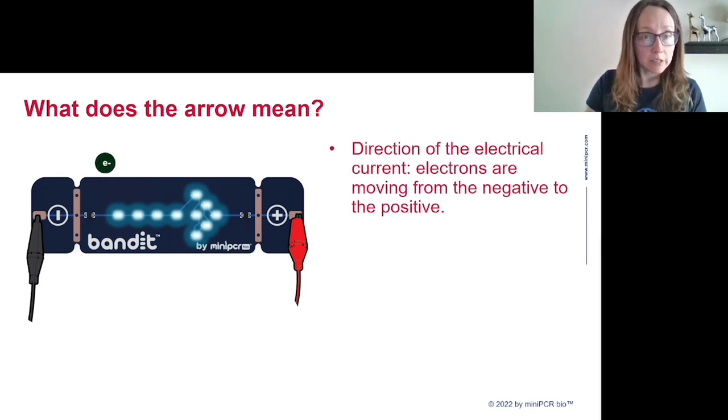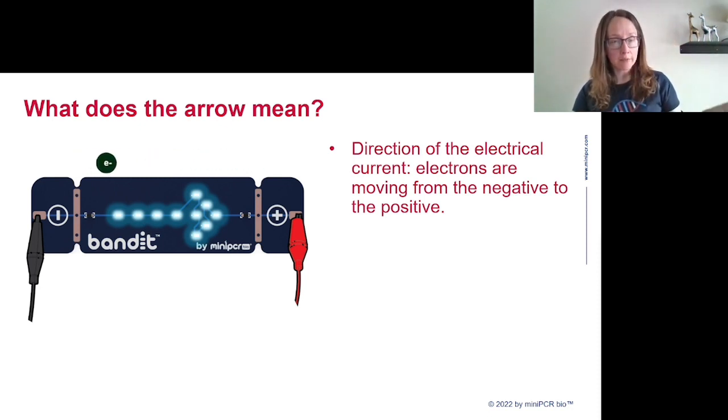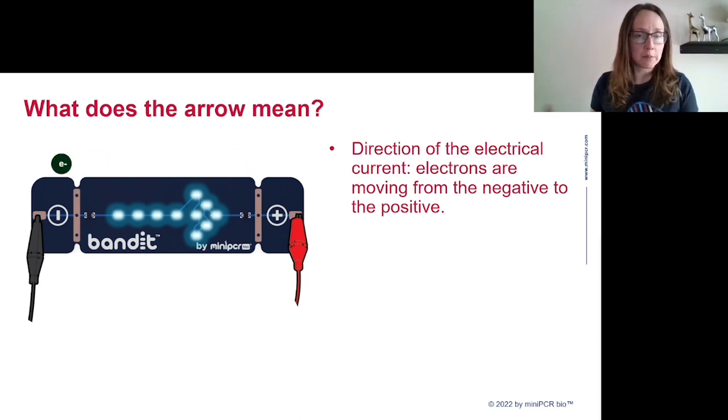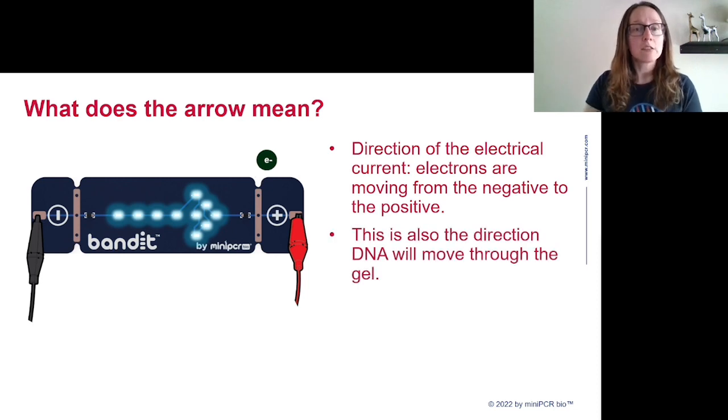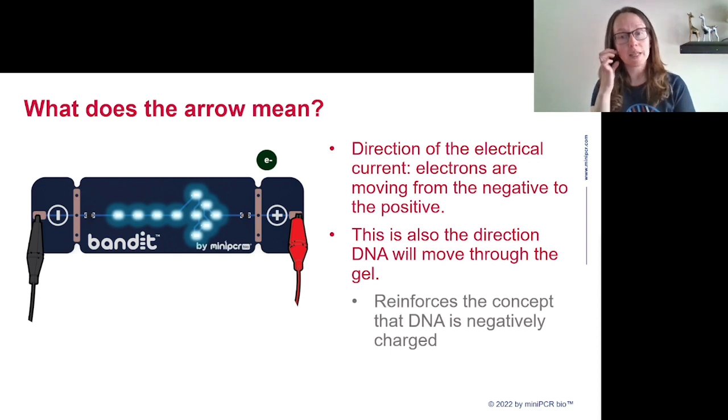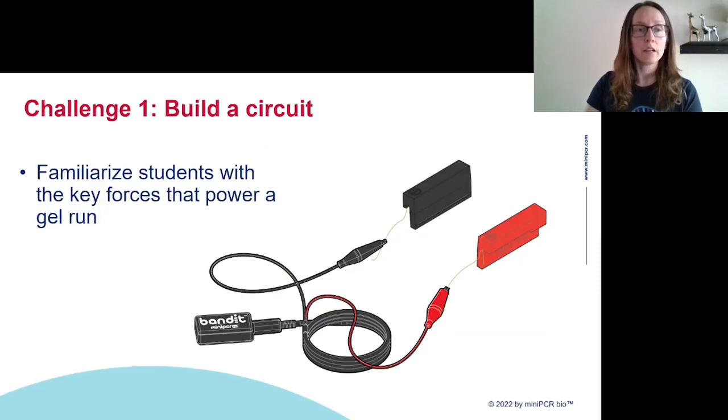When we connect the electrodes in the correct way and our arrow lights up, that tells us that electrons are moving from the negative electrode to the positive electrode. The flow of electrons is electricity. How does this apply to our electrophoresis system? This is also telling us the direction DNA will move through our gel. It'll reinforce the concept that DNA is negatively charged. We're going to return to this later on when it's time to run our gel.